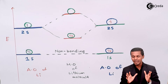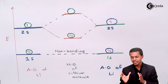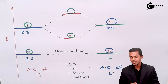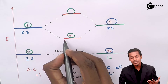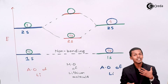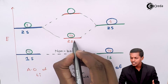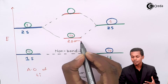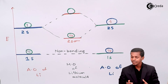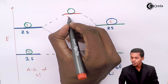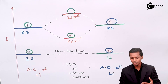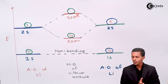We have not yet mentioned the names for the molecular orbitals. The lower molecular orbital is formed from the 2s orbital and forms a sigma bond, so it is known as σ2s. The upper molecular orbital is known as σ*2s, which represents the anti-bonding orbital. This completes the molecular orbital diagram for lithium.